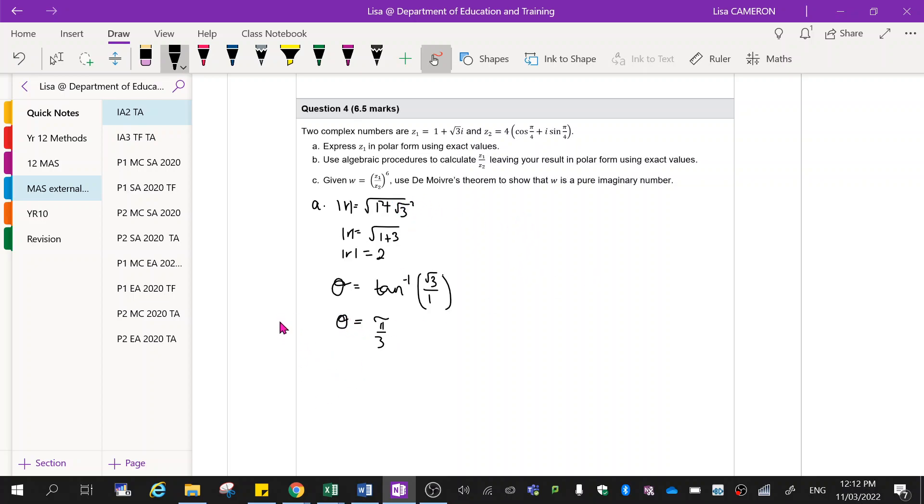The last thing that we want to check when we're doing our argument is that it is in fact in the right quadrant. So here we've got 1 and we've got root 3 putting it up here, meaning that pi on 3 is our correct angle that we're going to be using here.